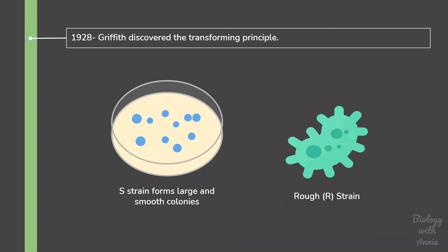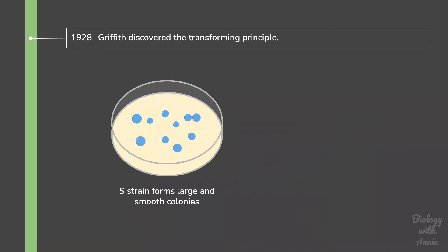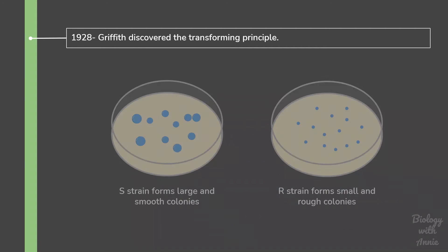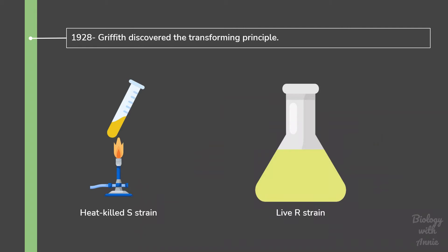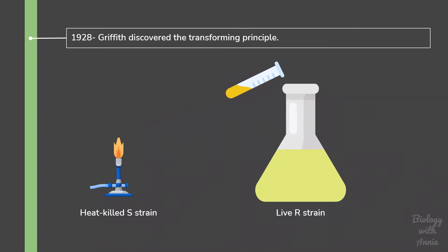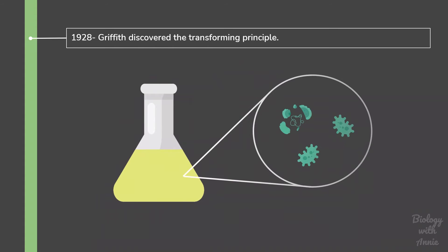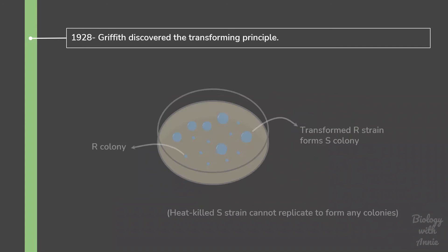The rough strain, however, cannot synthesize this capsule. As a result, they form small and rough colonies. In my previous video, I talked about how Griffith made an unexpected discovery when he mixed heat-killed smooth strain with the live rough strain. He found that some of the rough bacterial cells were transformed into live smooth cells. As a result, both smooth and rough colonies were formed.